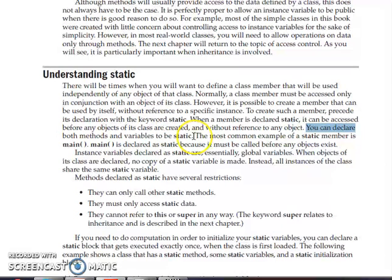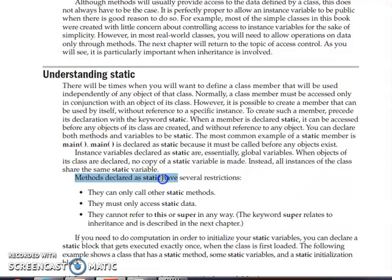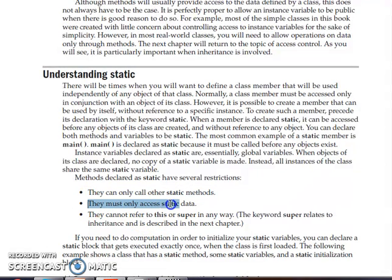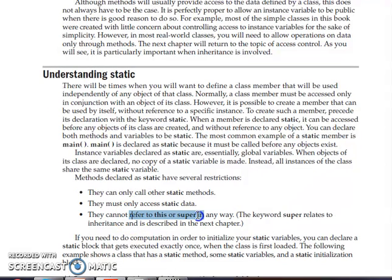We can declare both methods and variables as static. The most common example of a static member is the main method. Some important restrictions of static are: a static method can only call other static methods; they must only access static data; and they cannot refer to this or super keywords in any way. These are the restrictions posed on the usage of the static keyword.